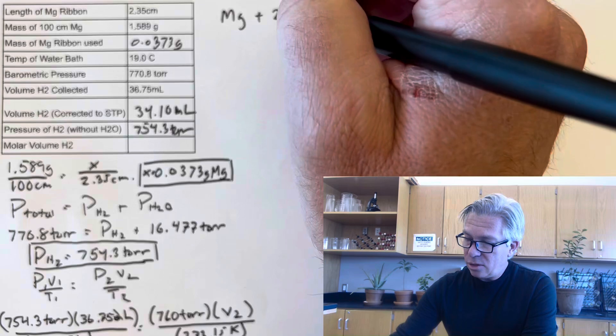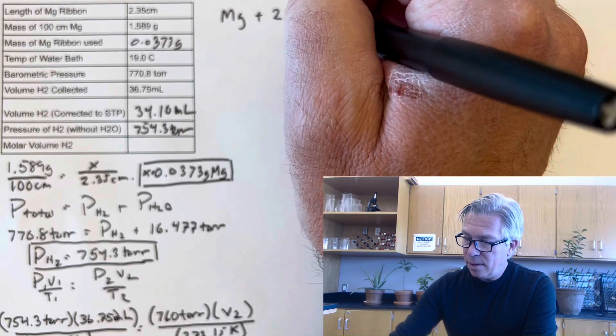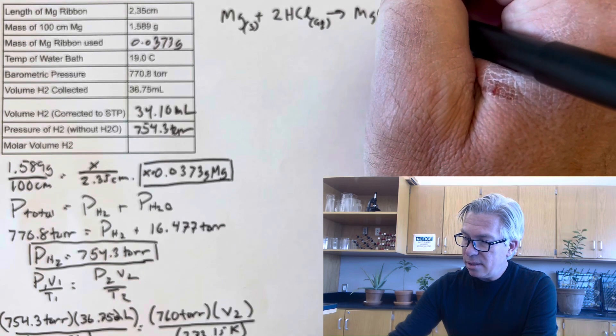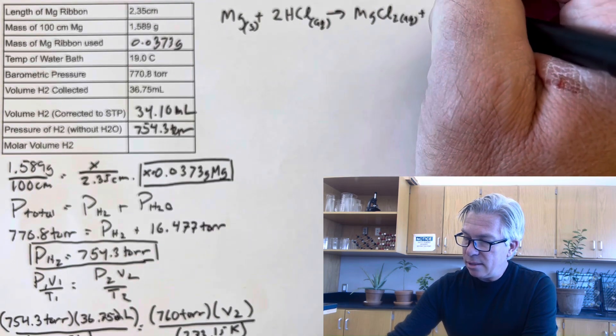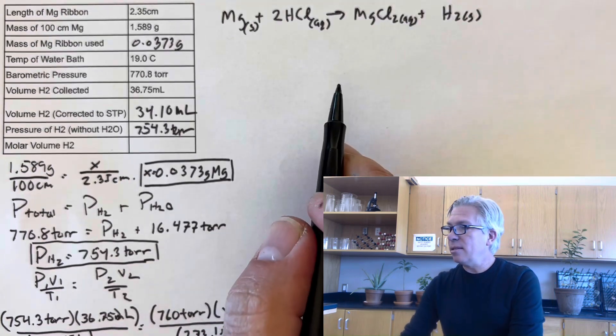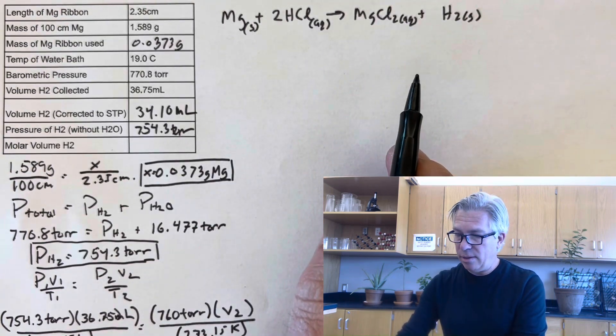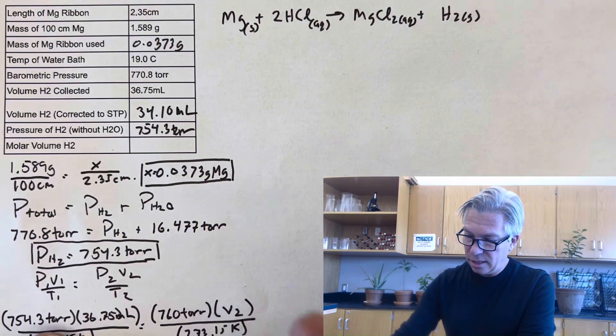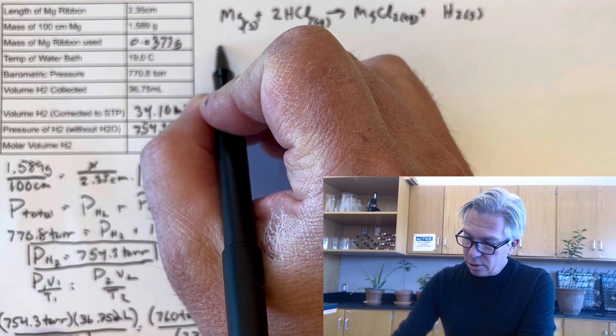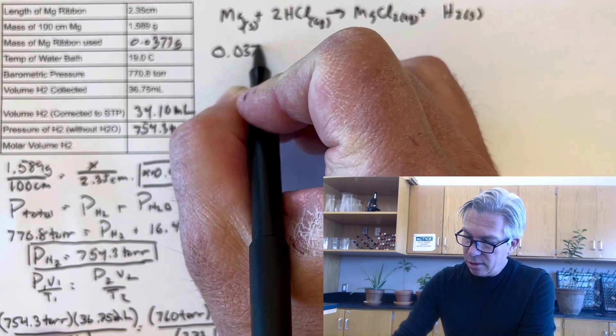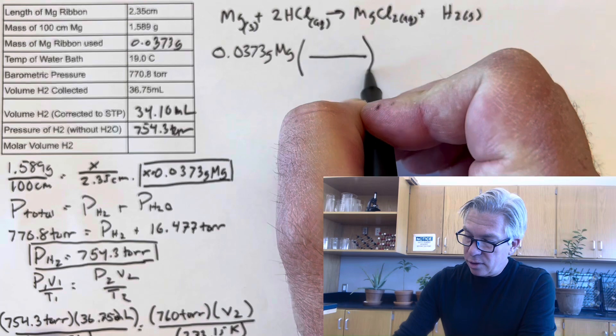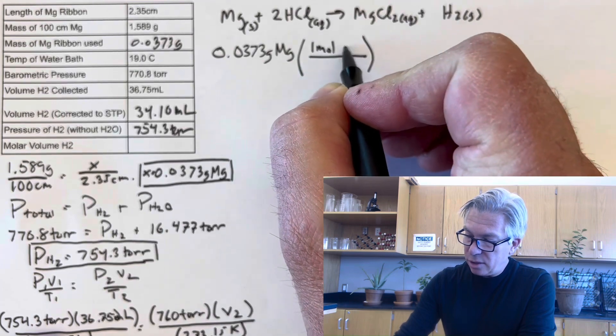The magnesium plus the hydrochloric acid, which was aqueous, that was solid. Let's do that for fun. Produced some aqueous magnesium chloride and some gaseous hydrogen. What's great about this is that it's all one to one ratios, except for that one to two. And so my mole ratio is going to be nice and easy.